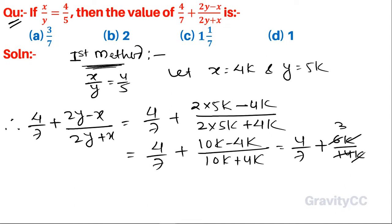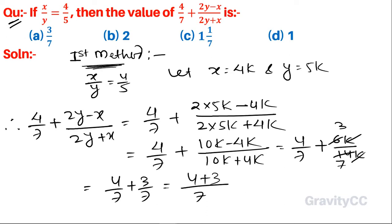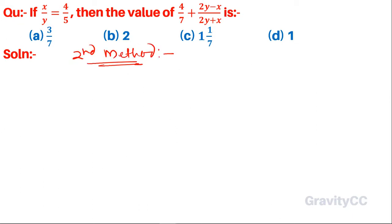The k's cancel and 6/14 simplifies to 3/7, so we get 4 upon 7 plus 3 upon 7, which equals (4 plus 3) upon 7, giving 7 upon 7. The 7s cancel, so the answer is 1. Now the second method: